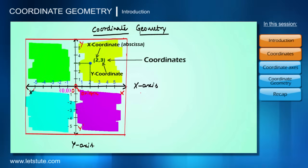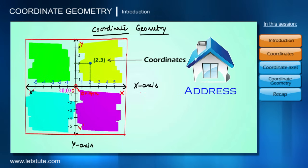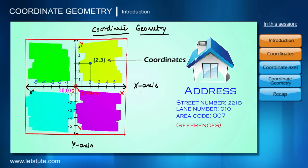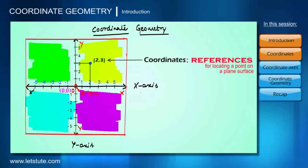Talking about coordinates, we can say they are the location of a point, or in other words, the address of the point. For example, to write my home address, I give the street number, lane number, area code, etc. All these are references to reach my home. Similarly, coordinates are references for locating a point on the plane.